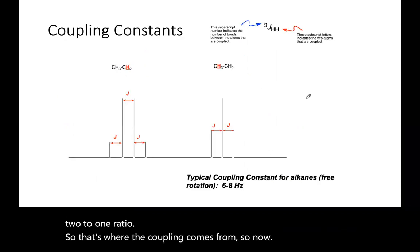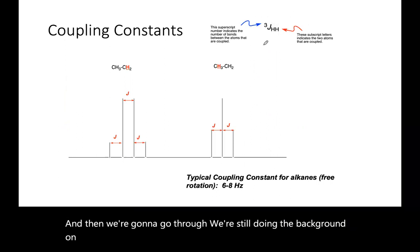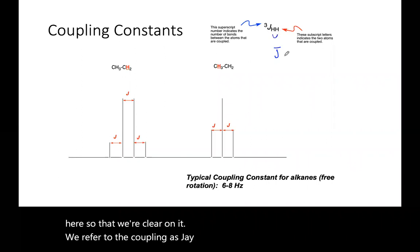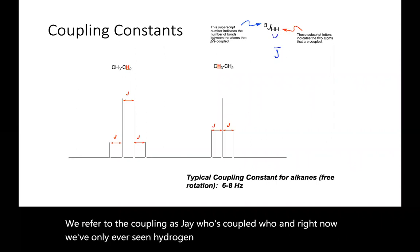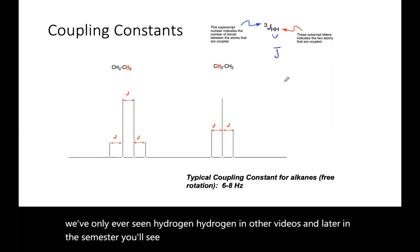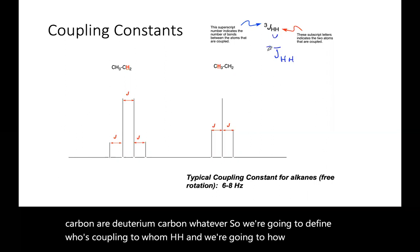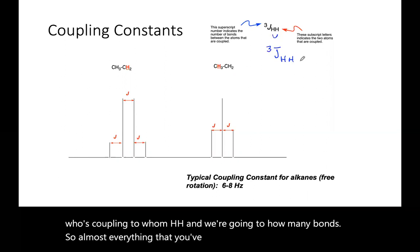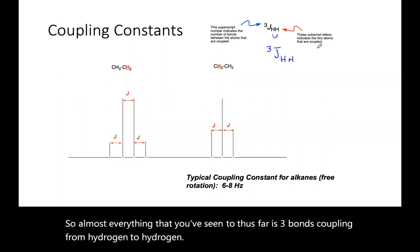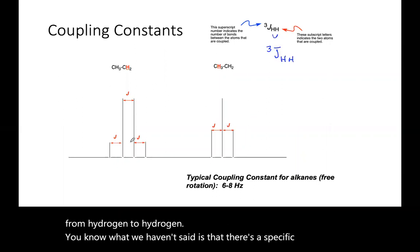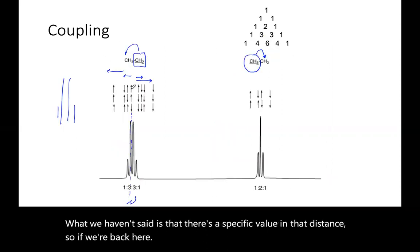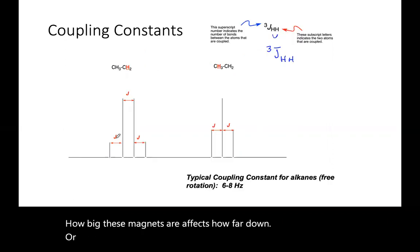That's where the coupling comes from. We're going to use some terms. We refer to the coupling as J. Who's coupled to who, and right now we've only seen hydrogen to hydrogen. Later in the semester, you'll see some H to C, or phosphorus to carbon or deuterium to carbon. So we're going to define who's coupling to whom, H to H, and how many bonds. Almost everything you've seen thus far is three bond coupling from hydrogen to hydrogen. There's a specific value in that distance. How big these magnets are affects how far down or upfield those shifts are. We call that coupling constant. That J is a coupling constant, and it's a value that's independent of the size of the instrument.